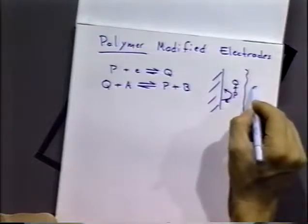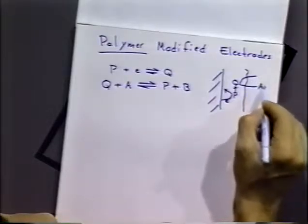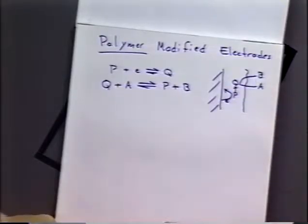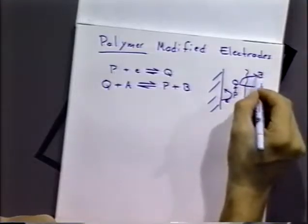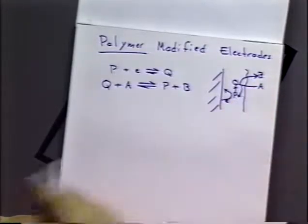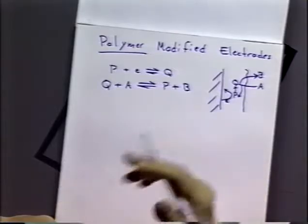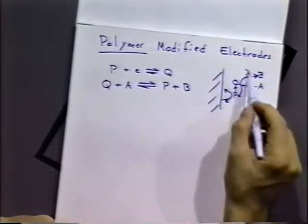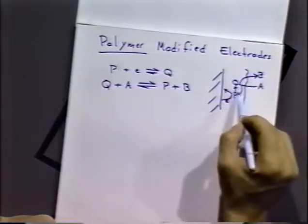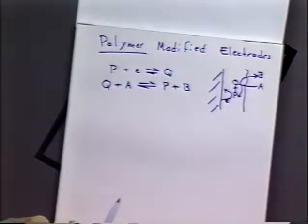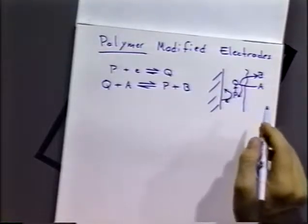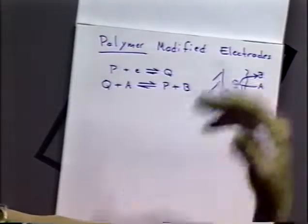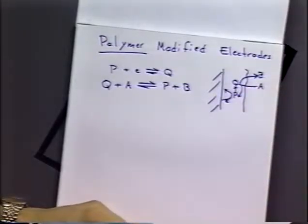Q can do a job on molecule A that diffuses into the polymer, reacts with Q forming B. When that happens, it regenerates P and the cycle can repeat itself. As long as there is A available to regenerate P, we'll continue to get electron transfer this way. Of course, for that to work, P has to have a larger reduction potential than A — it has to be a stronger reducing agent than A.